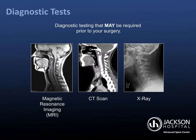Your surgeon will use diagnostic tests to determine the source of any spine abnormalities and will share those findings with you. You and your surgeon will work together to determine the correct plan for your care. Common diagnostic tests before spine surgery include magnetic resonance imaging (MRI), computerized tomography (CT scan), and x-rays. Each test shows different aspects of your spine and surrounding areas. Ask your surgeon if you have any questions about why a test is ordered or how it is performed.